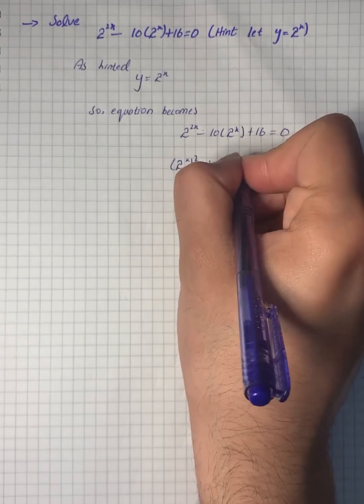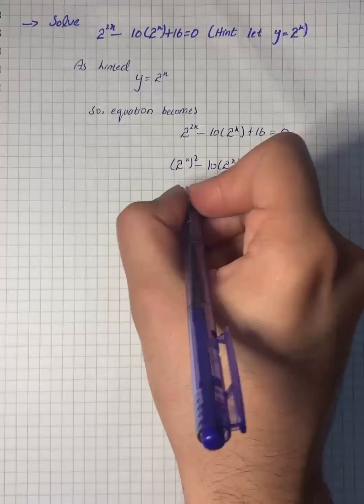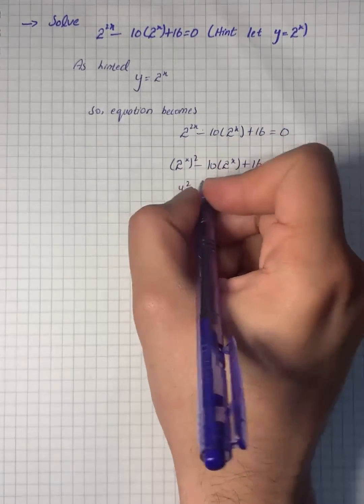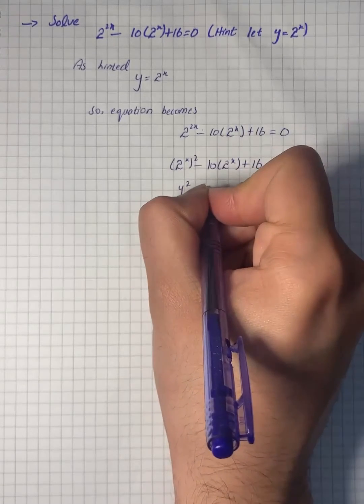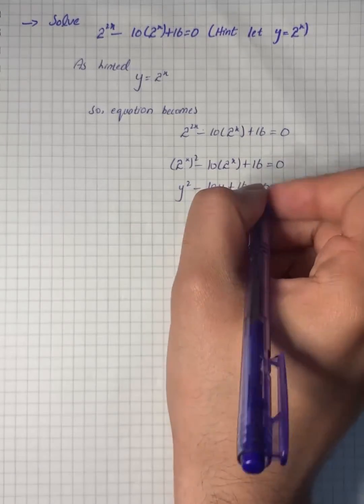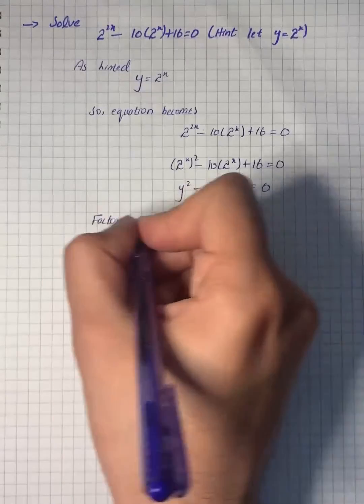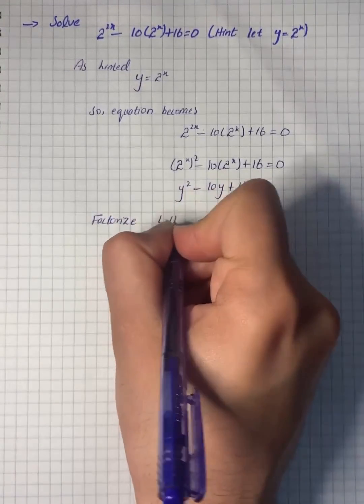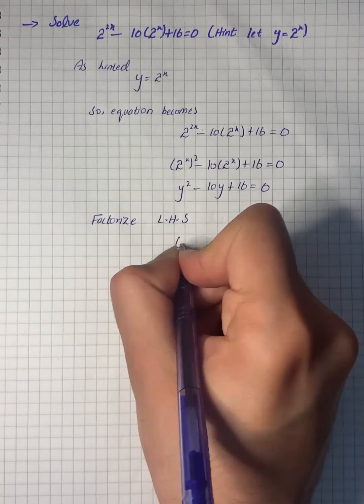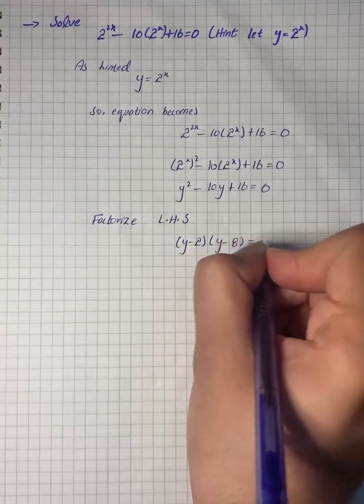We can write y^2 for 2^(2x), giving us y^2 - 10y + 16 = 0. Now we will factorize the left hand side, which gives us (y - 2)(y - 8) = 0.